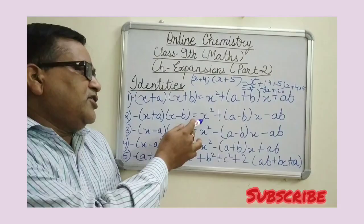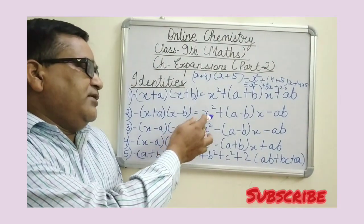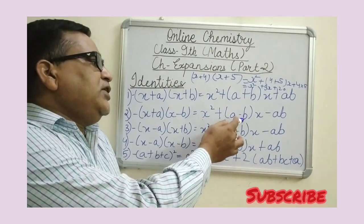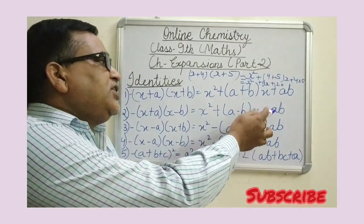The next identity is: x plus a into x minus b is equal to x squared plus a minus b into x minus ab.